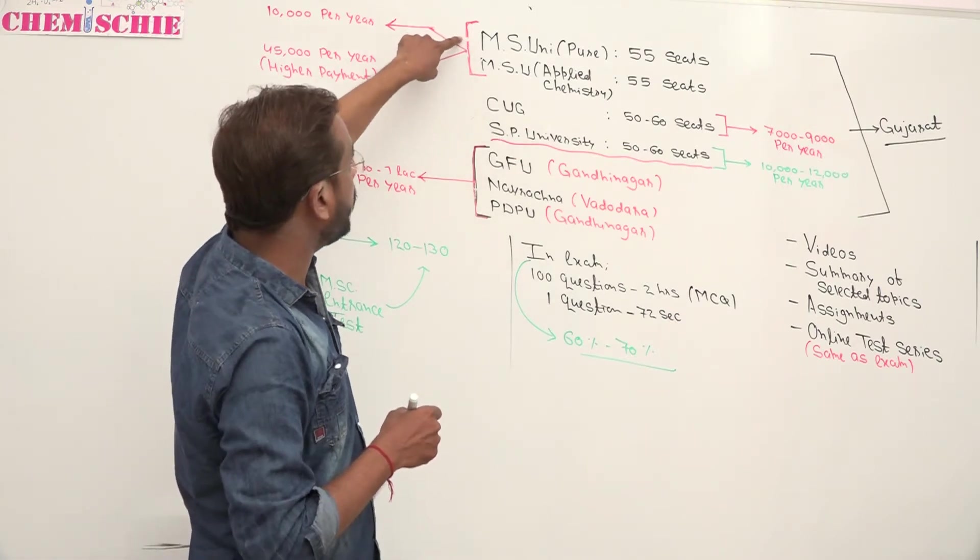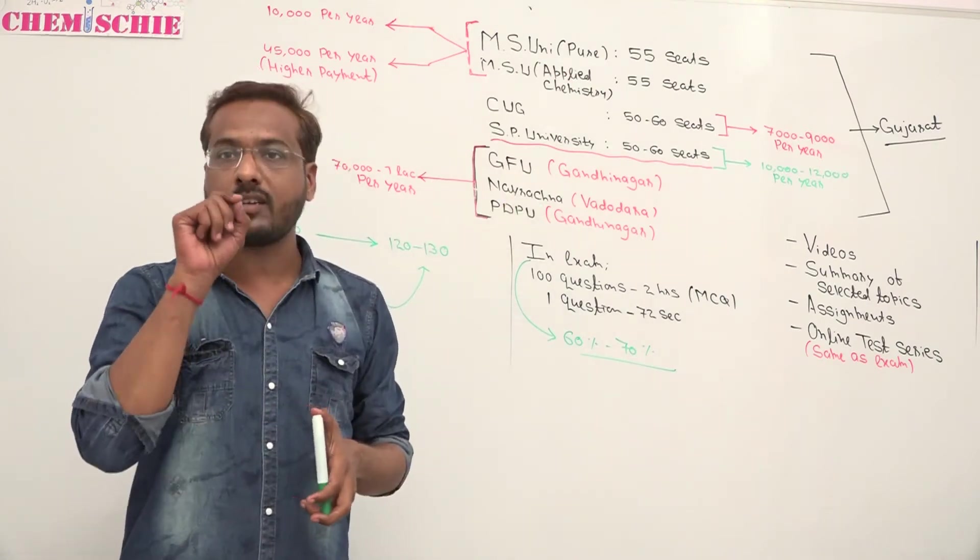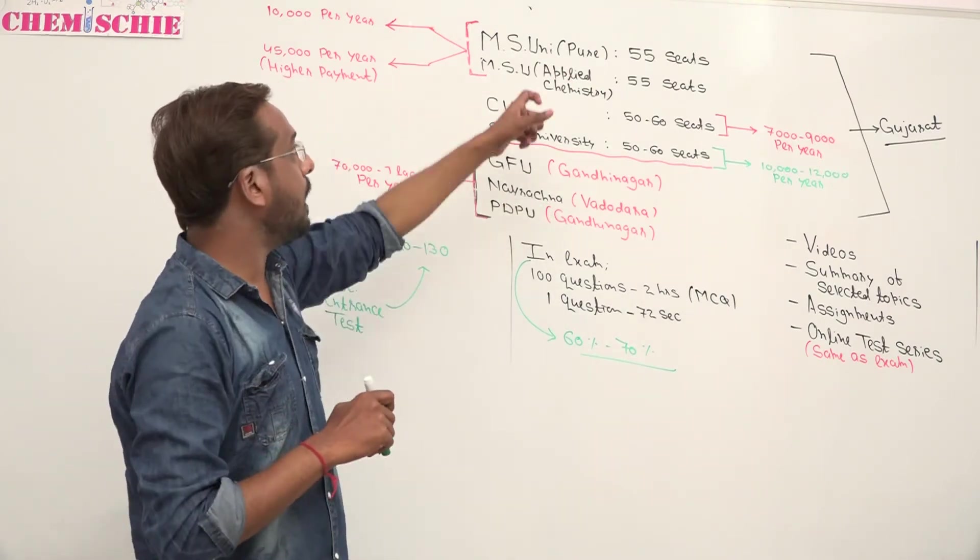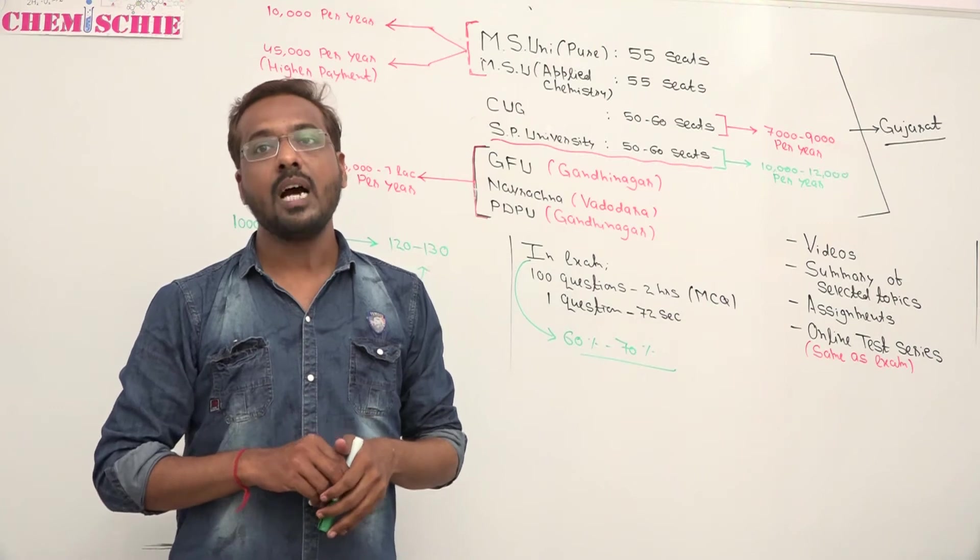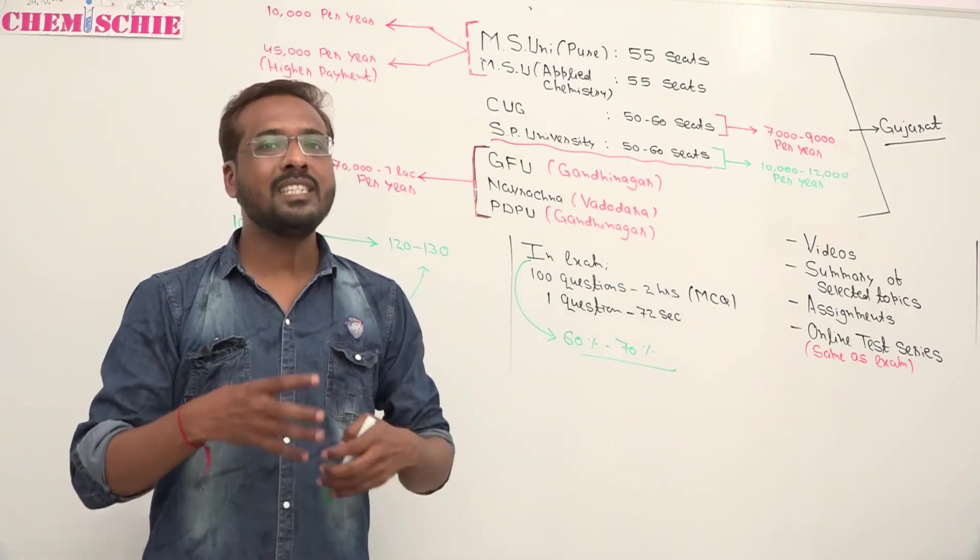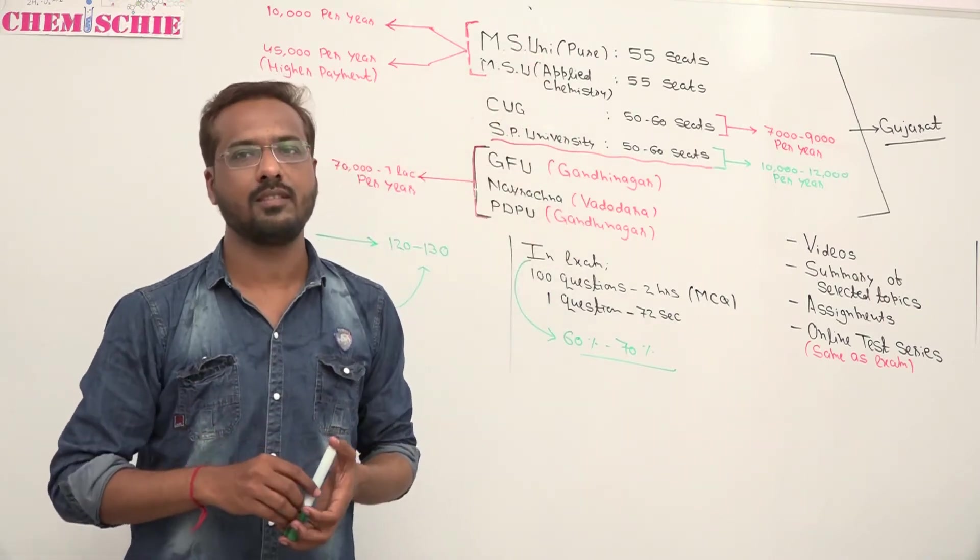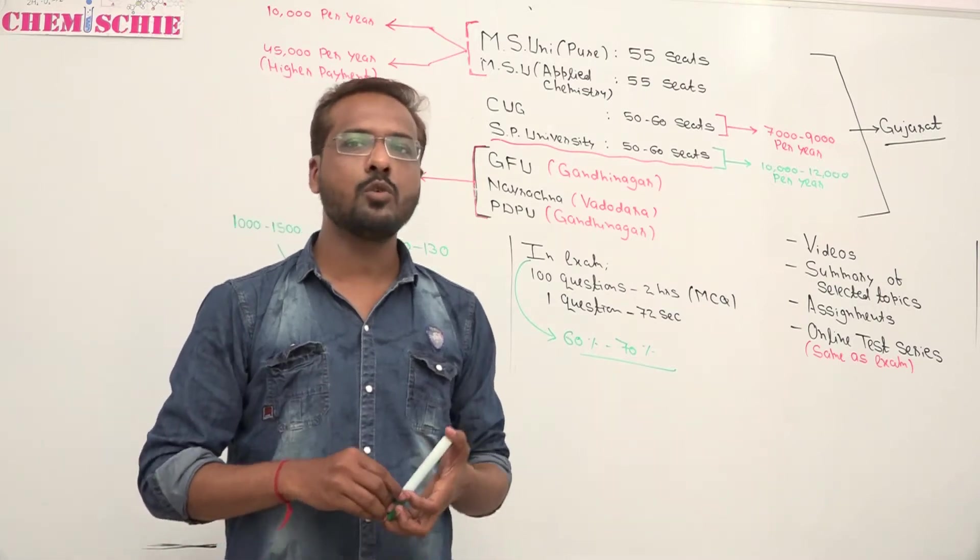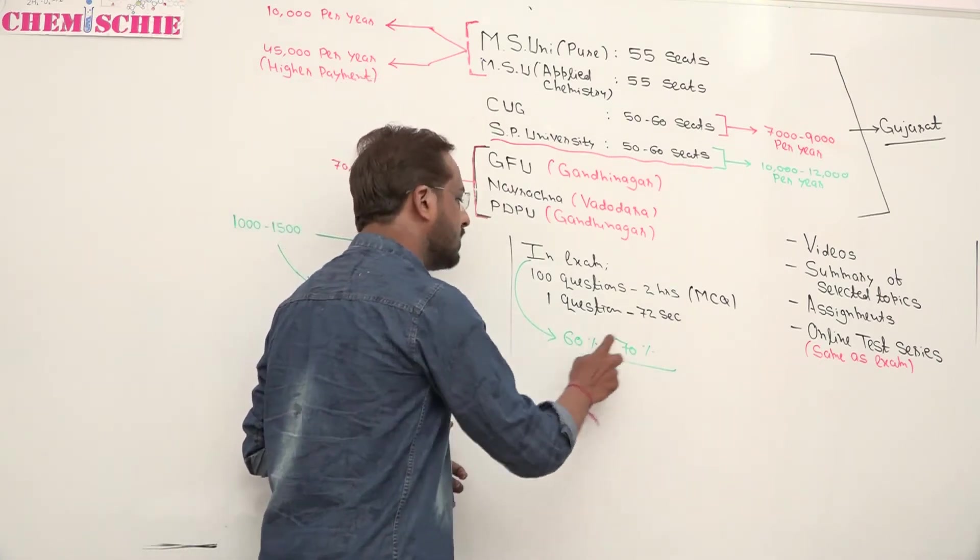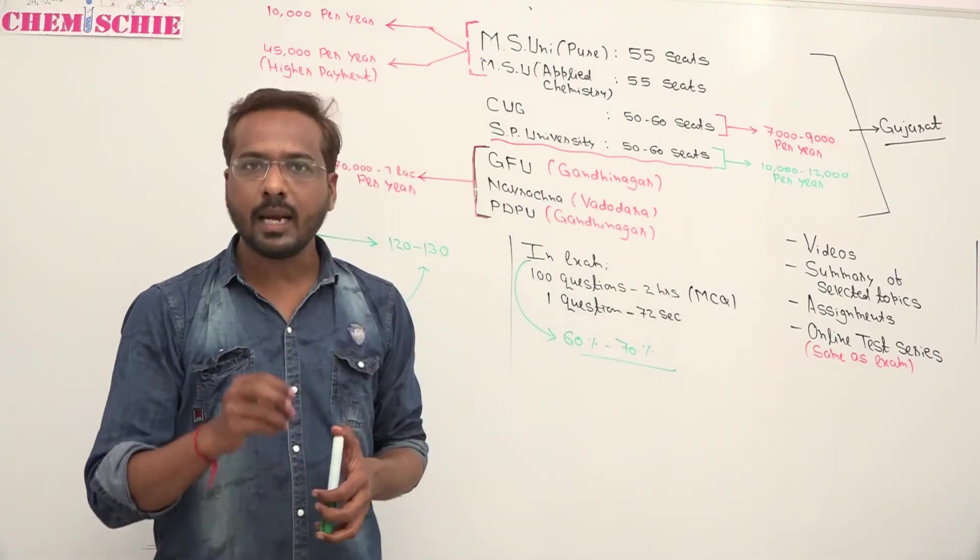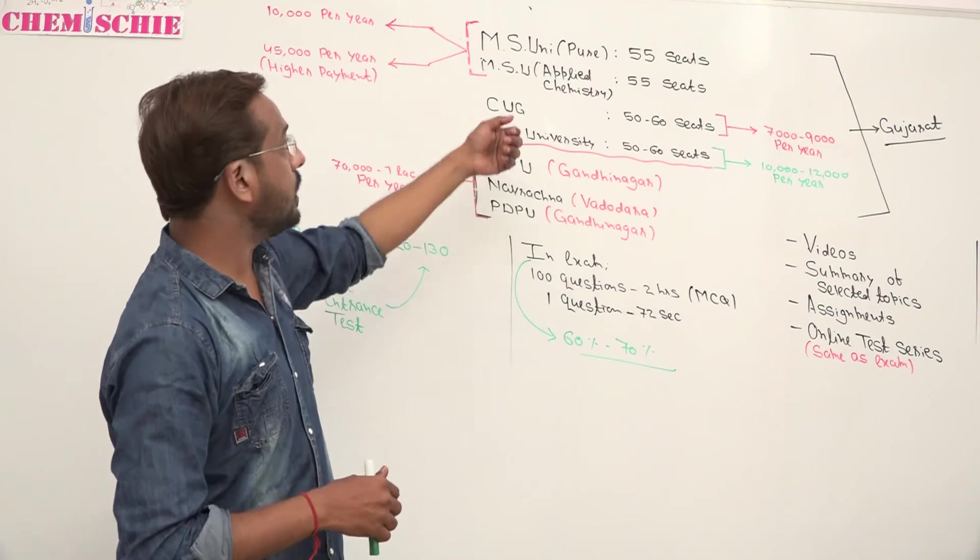Let me tell you two things: pure and applied chemistry. In pure MSC entrance, there are negative marks. In applied chemistry, there are no negative marks. Our strategy is, if you have negative marks, no need to attempt all questions. You don't need to attend certain questions, where you have to cover 60 to 70% marks.